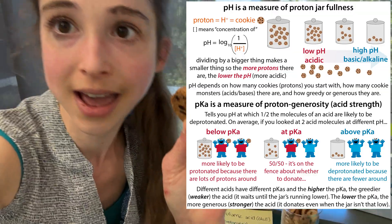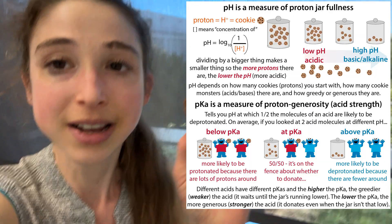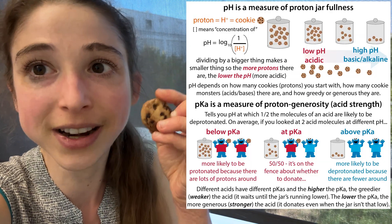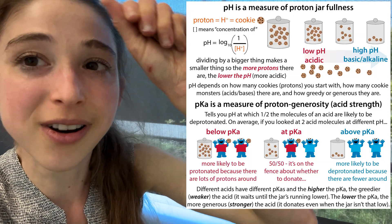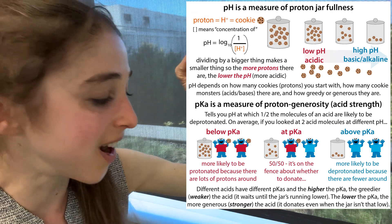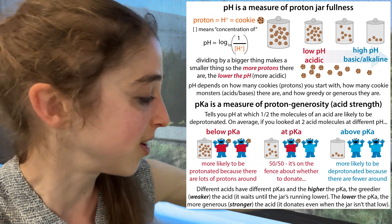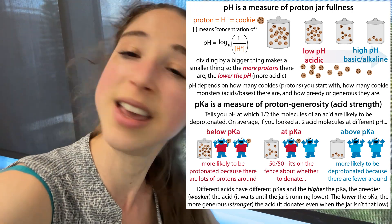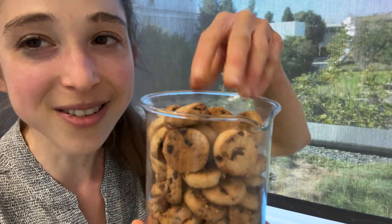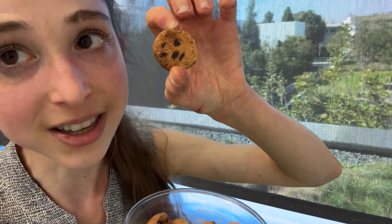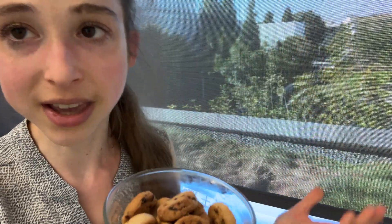And, depending on how weak of an acid that you are, the more greedy you are — the weaker the acid, the more likely you are to hold on to that proton. If you have a stronger acid, you're more likely to drop the cookie. But if the cookie jar is really full — the pH is really low — then you're still going to find it with the cookie. And the pKa is the pH at which you're half likely to find it with the cookie as without a cookie.